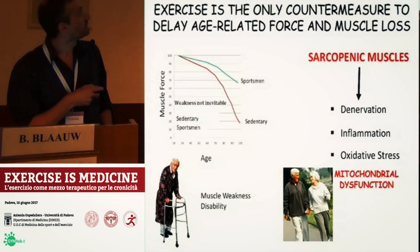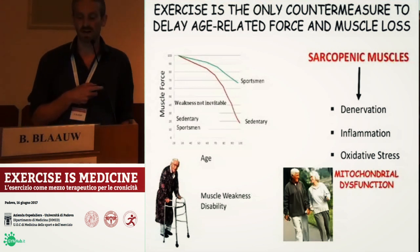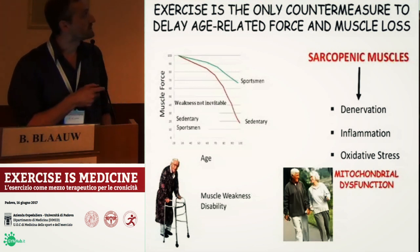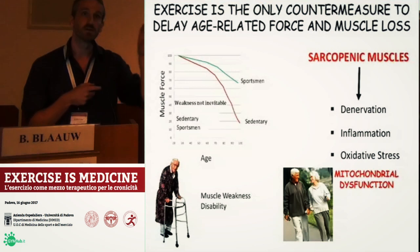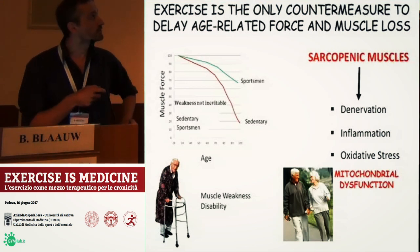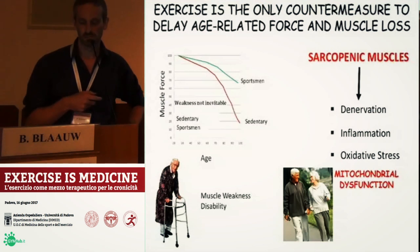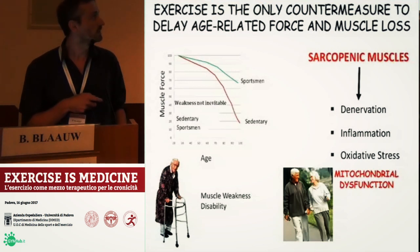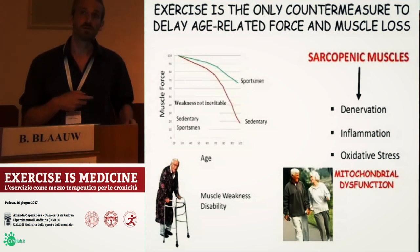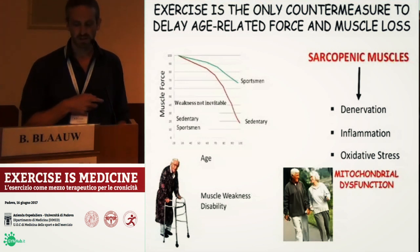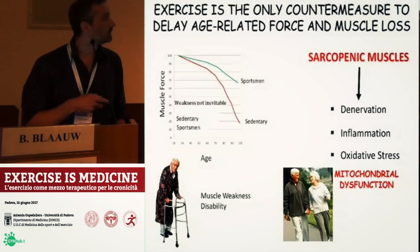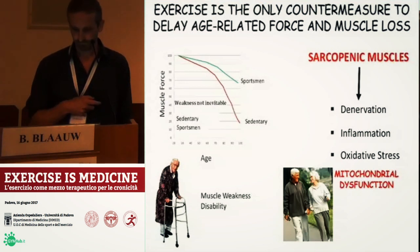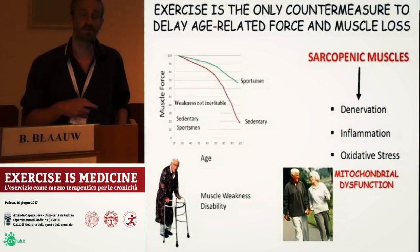In sarcopenic muscles — those losing force and muscle mass — we have a lot of pathological situations going on. We can see there is denervation, so some muscle fibers are no longer innervated. We have a general inflammation leading to muscle wasting. We have oxidative stress. What all these three things have in common, and another major hallmark of muscle aging, is mitochondrial dysfunction. In skeletal muscle during aging, mitochondria start to function worse.